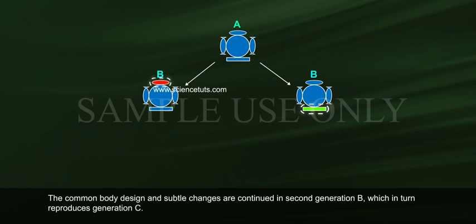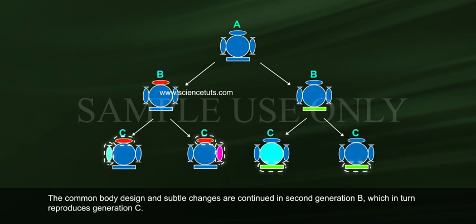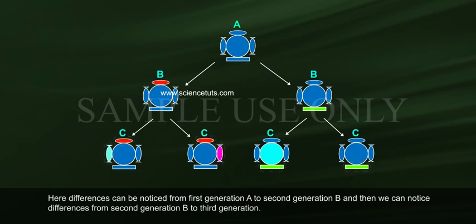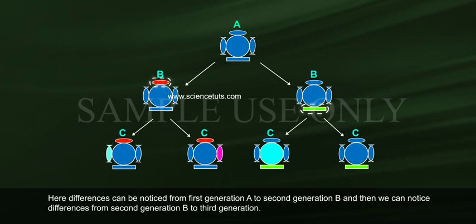The common body design and subtle changes are continued in second generation B, which in turn reproduces generation C. Differences can be noticed from first generation A to second generation B, and then further differences from second generation B to third generation C.